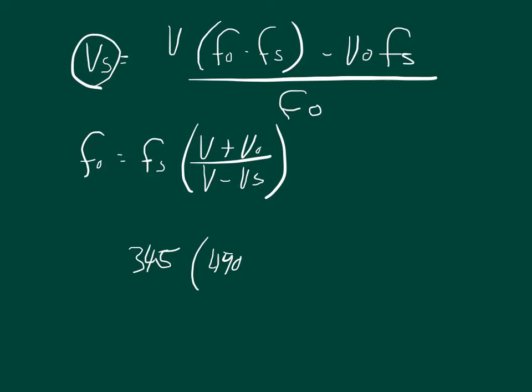And so we got 490 minus the frequency of the source. So what is the frequency of the source? We know that as it's coming towards him, he hears it at 490. As it's leaving, he hears it at 471. So we could take that and subtract, and we would get approximately 19, a difference of 19.